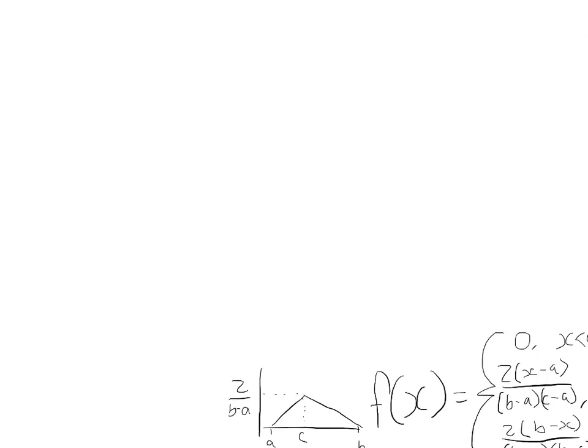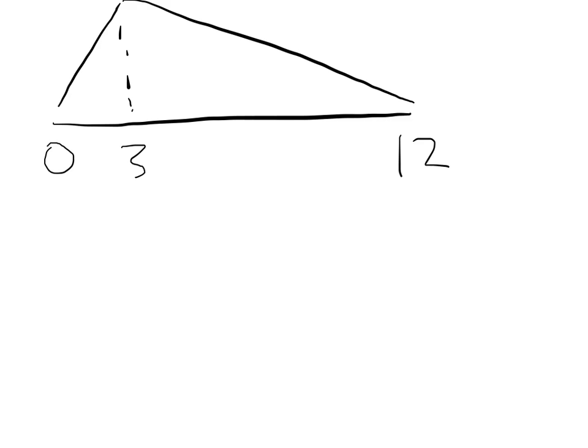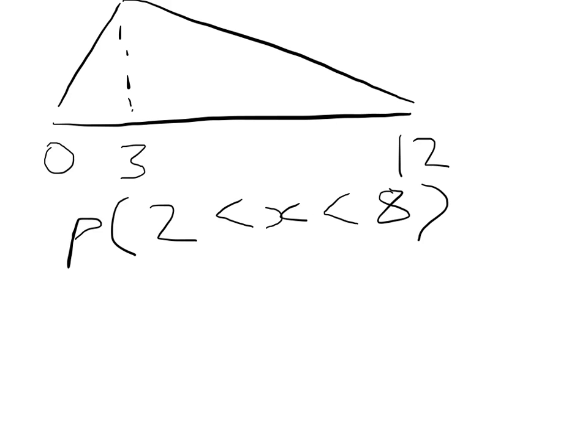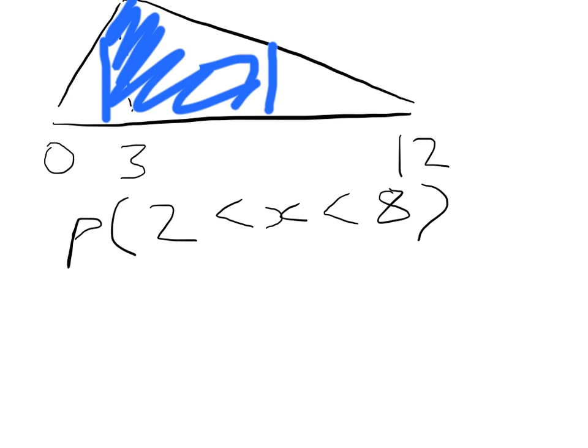For the last example, we're going to do a multi-step problem that involves finding a probability spanning either side of the curve. We have a fairly standard triangular distribution going from 0 to 12 with a peak at 3. We want to find the probability that X is between 2 and 8. We'll draw in the region we're trying to find on the diagram.